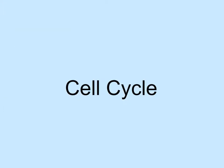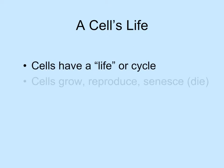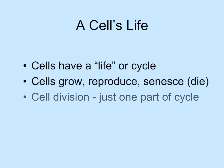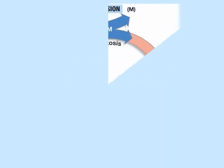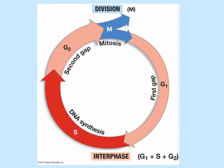Now it's finally time to talk about the cell cycle. A cell's life or cycle includes many different stages — cells grow, reproduce, and senesce. Cell division is only a small part of the cell cycle, but it is a very important and highly coordinated part. The eukaryotic cell cycle includes interphase and the M phase. Interphase consists of the first gap phase G1, DNA synthesis S, and the second gap phase G2. The M phase consists of mitosis and cytokinesis.